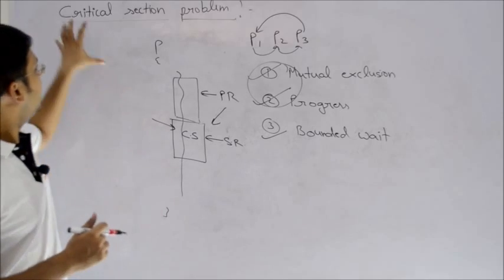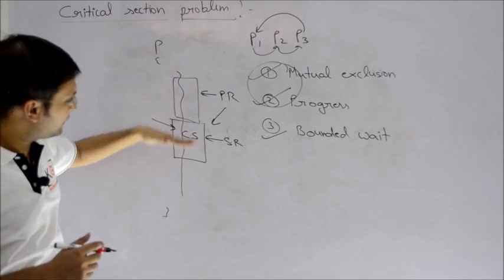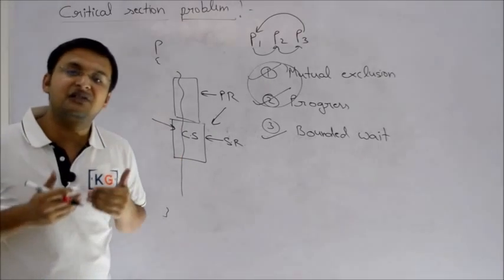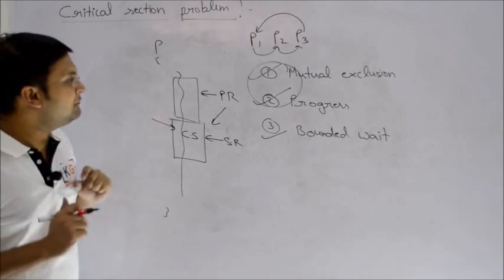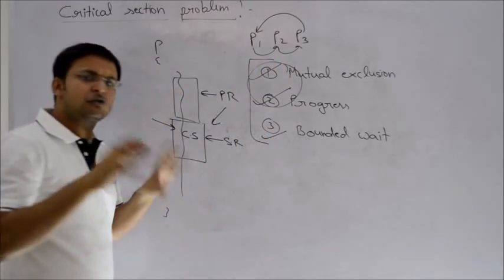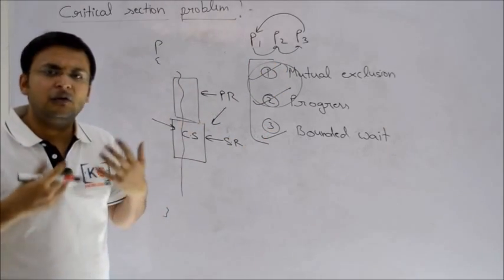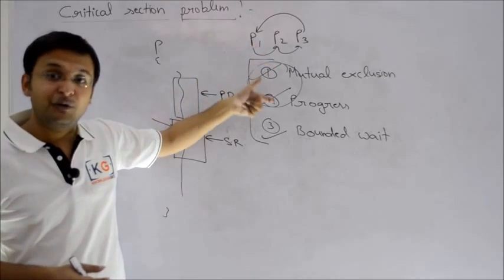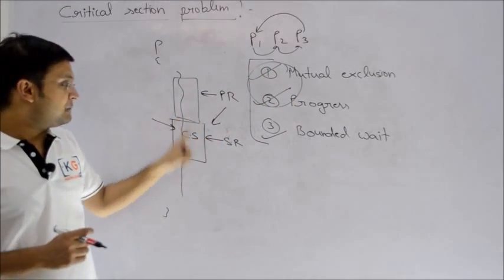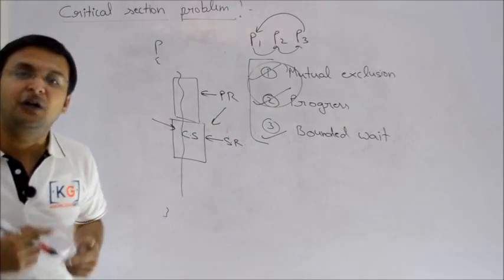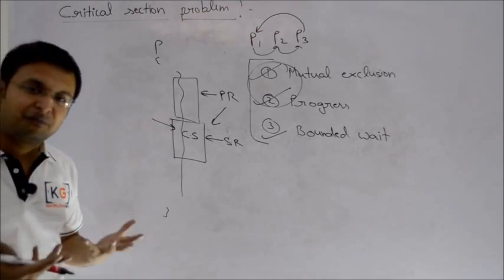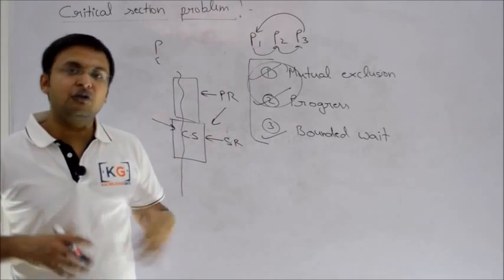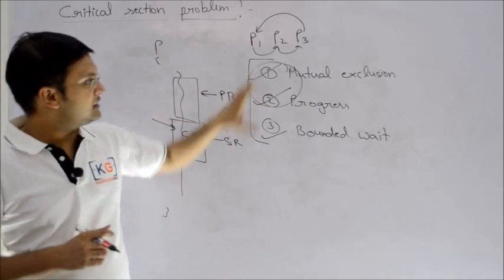To summarize, critical section problem is when a process accesses a shared resource, we call it critical section. And we want the system not to go into an inconsistent state despite multiple processes. There are three criteria which any solution must satisfy. Two criteria are mandatory: mutual exclusion and progress. Mutual exclusion means one at a time. If critical section is accessed in one-to-one fashion, you will never end up in an inconsistent system. Progress means only those processes should compete who actually want to enter critical section.